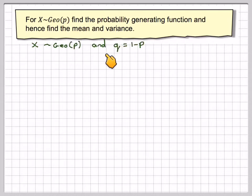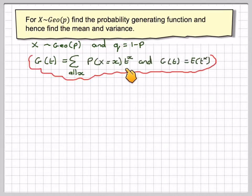So if x is geometric p and q is 1 minus p, then G(t) will be the sum over all x of P(X=x) times t to the x, and G(t) is also equal to E(t^X). These things are the same thing.